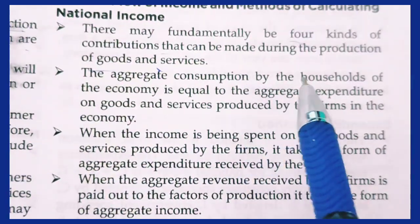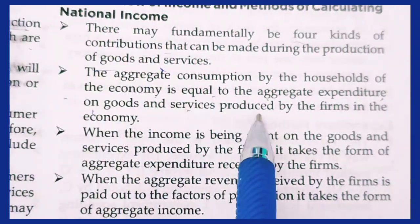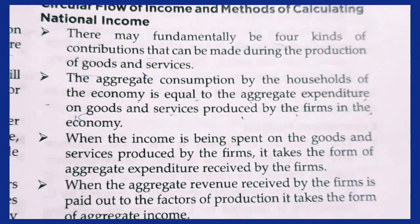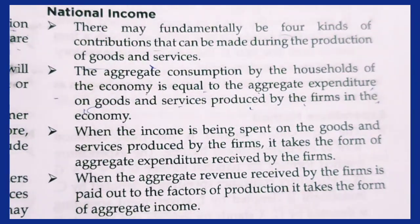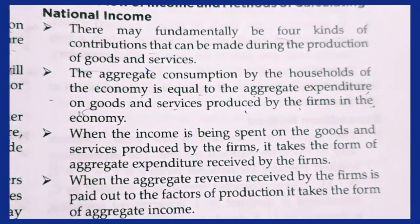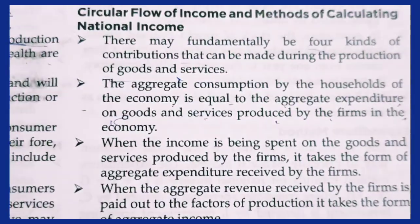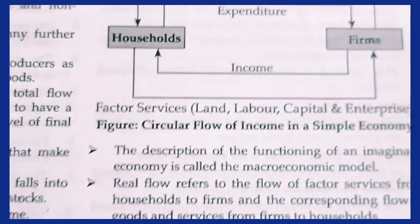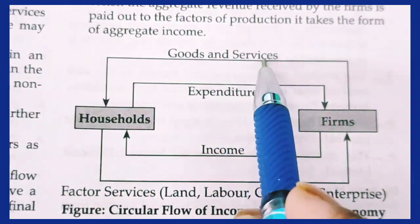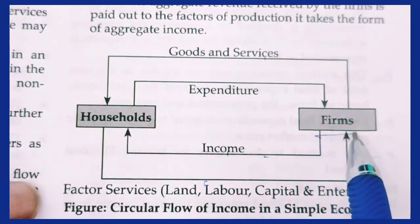The aggregate consumption by households in the economy is equal to the aggregate expenditure on goods and services produced by firms. A firm undertakes production, generating output, which flows as income to households. Households then spend that income on daily expenses, and that expenditure flows back indirectly to firms through the purchase of their products.